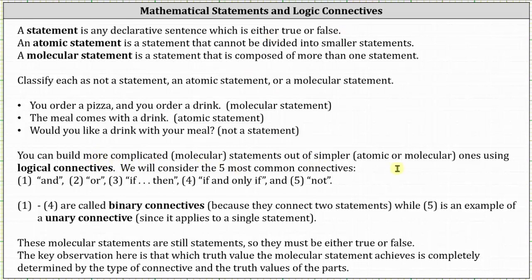We can build more complicated statements out of simpler ones using logical connectives. We will consider the five most common connectives which are and, or, if then, if and only if, and not. One through four, meaning and, or, if then, if and only if, are called binary connectives because they connect two statements, while five, or not, is an example of a unary connective since it applies to a single statement. These molecular statements are still statements, so they must either be true or false. The key observation here is that which truth value the molecular statement achieves is completely determined by the type of connective and the truth values of the parts.